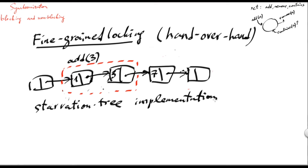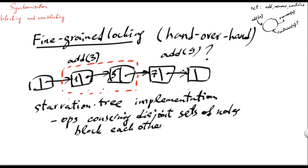However, there is still one problem: even operations that do not conflict — that do not concurrently update the same nodes in the list — may still block each other. For example, when operation add3 still keeps locks on nodes 1 and 5, no operation dealing with nodes later in the list can succeed. For example, operation add9, which would potentially only modify the node storing 7, would have to wait until add3 completes, even though there is no direct conflict. That's why we may think of an optimistic approach. One possibly negative feature of this hand-over-hand approach is that operations concerning disjoint sets of nodes still block each other, thus decreasing the concurrency of the resulting implementation.